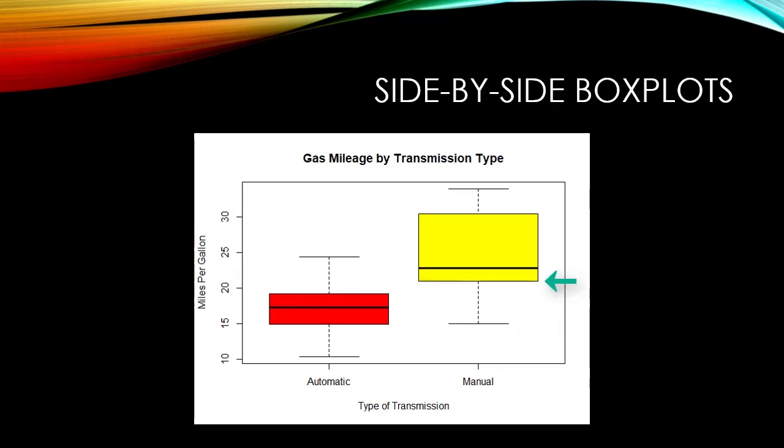A box plot illustrates the five number summary: minimum, first quartile, median, third quartile, and maximum.